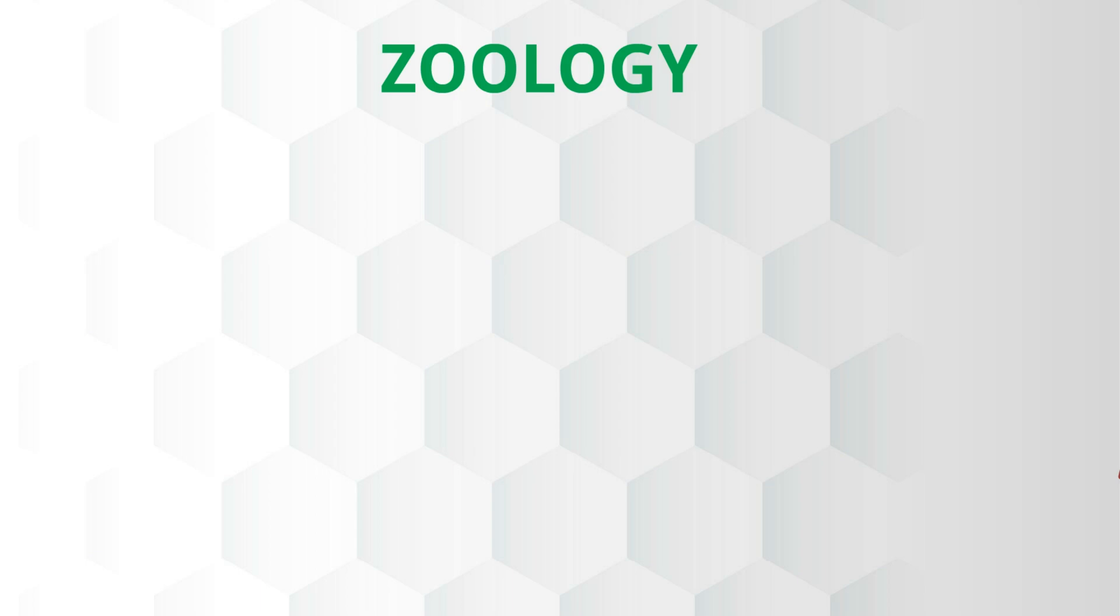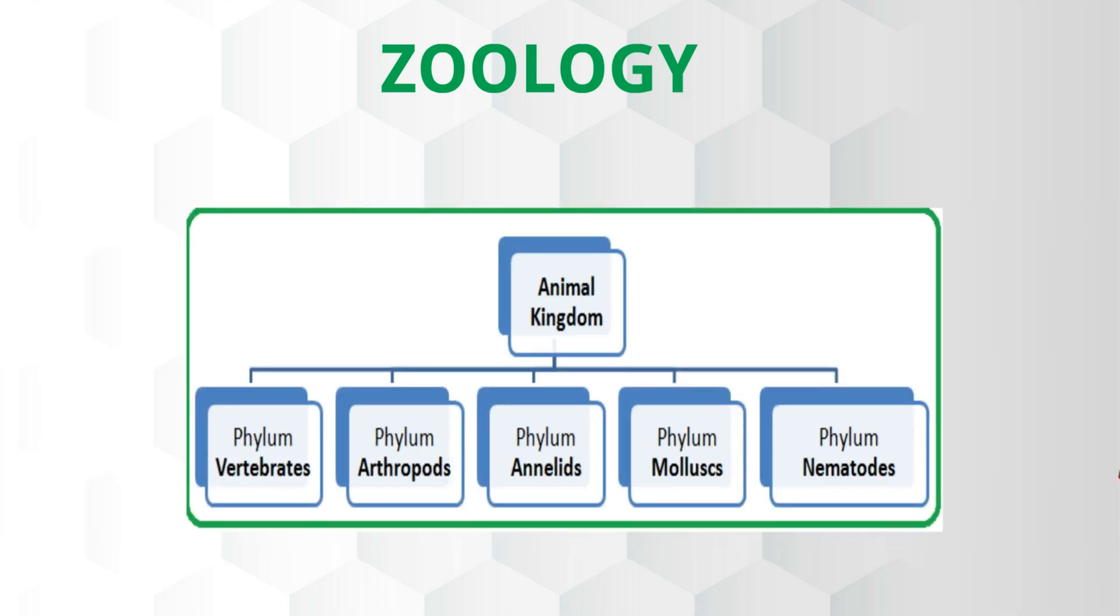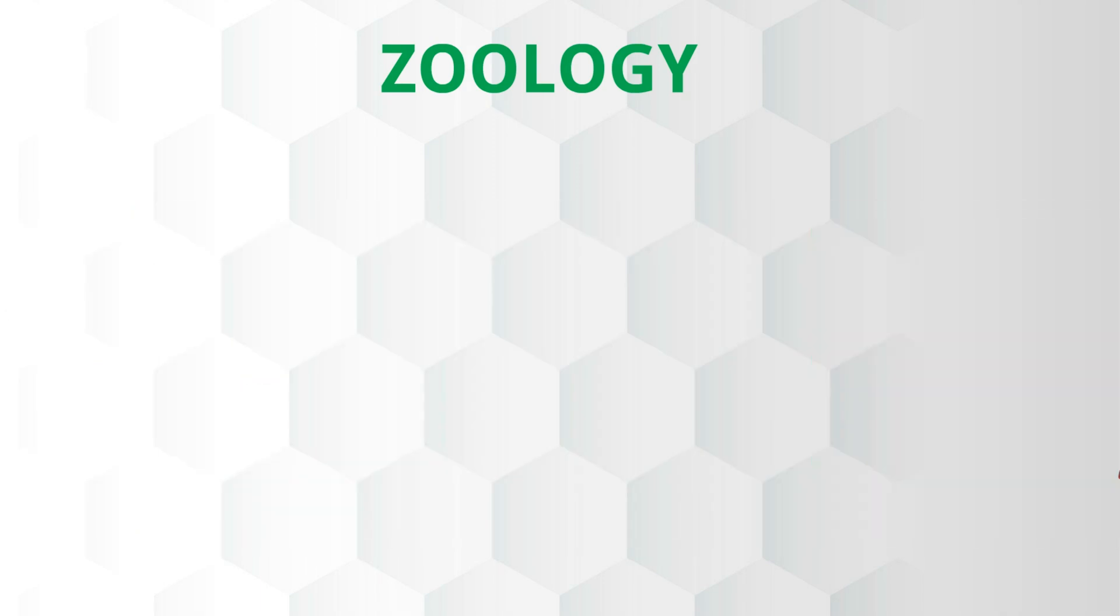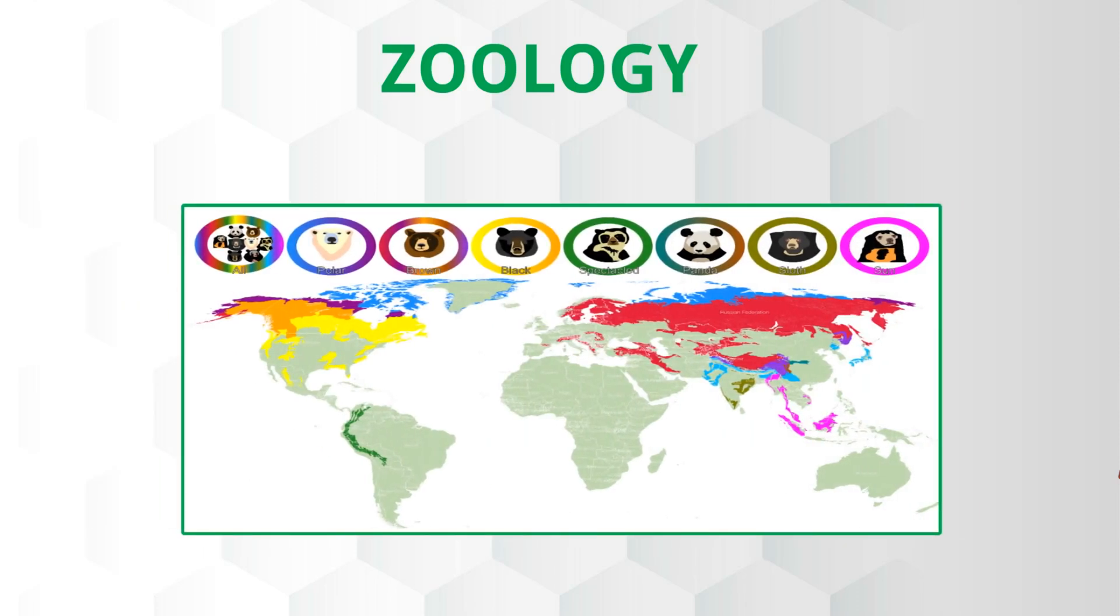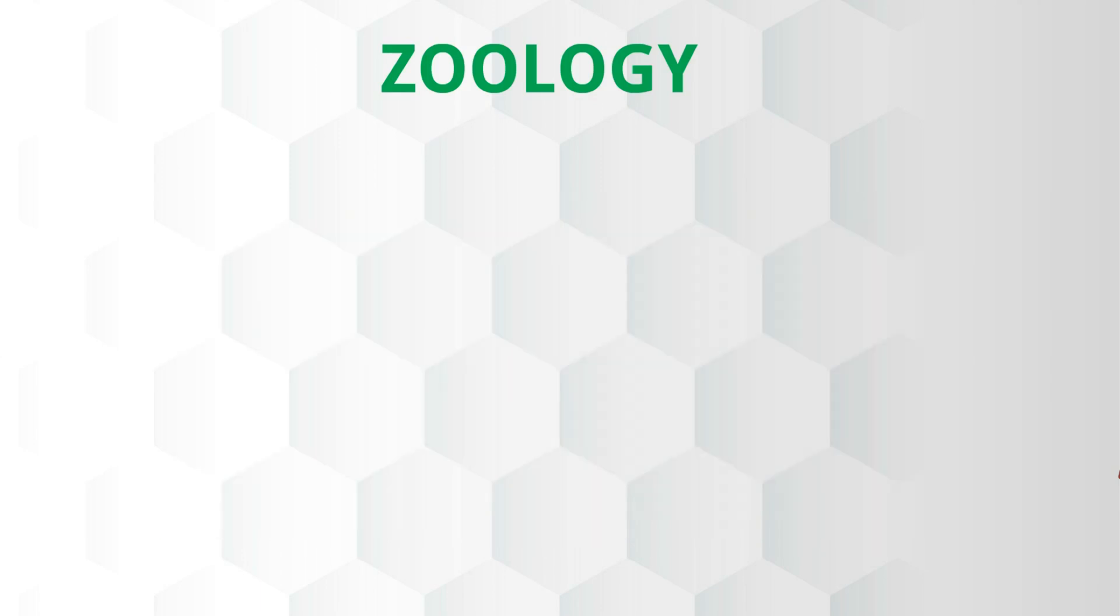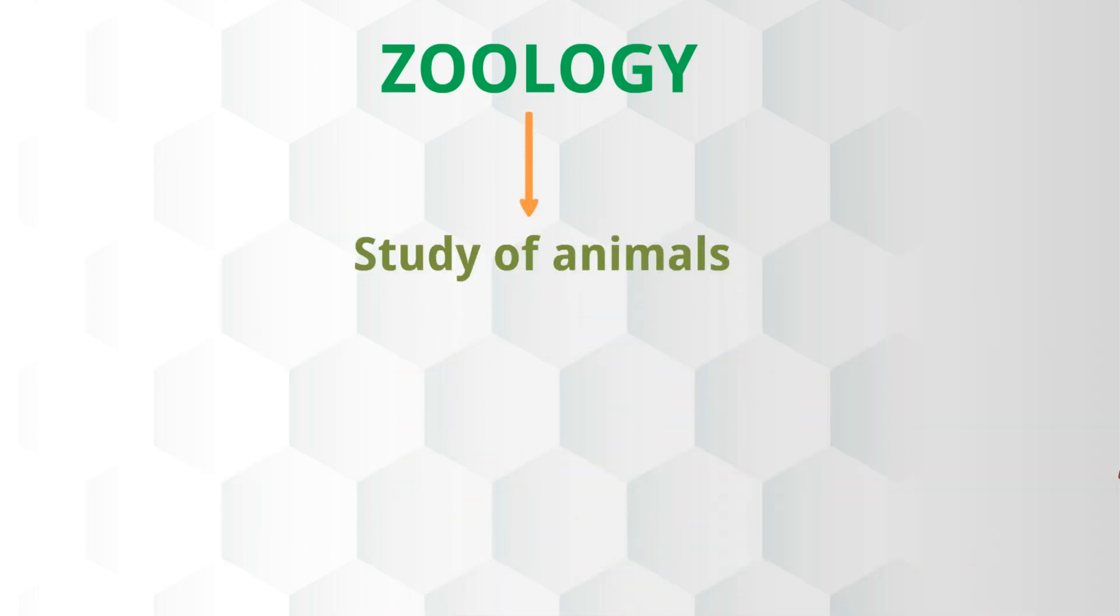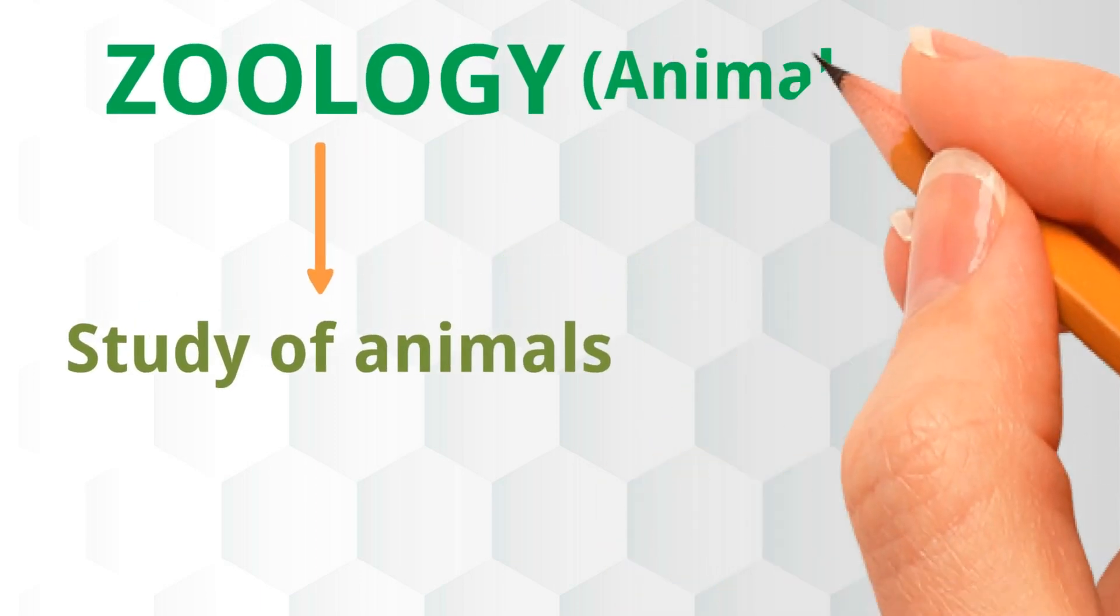Zoology is the division of biology that studies the animal kingdom, including the structure, embryology, evolution, classification, habits, and distribution of all animals, both living and extinct, and how they interact with their ecosystems. Simply, we can say that zoology is the study of animals. That's why biologists call zoology animal biology.